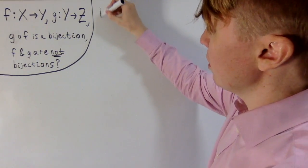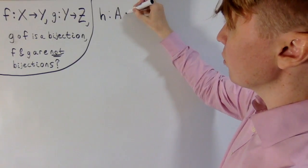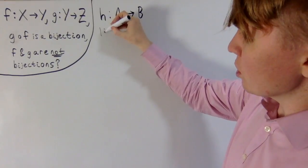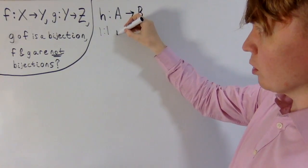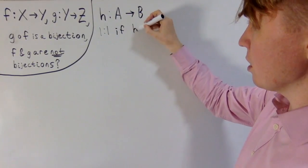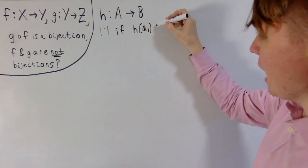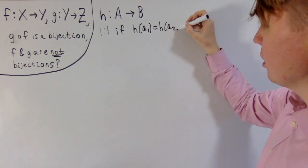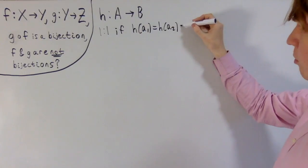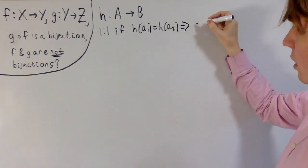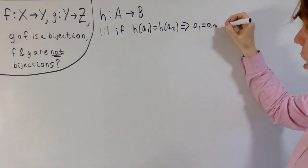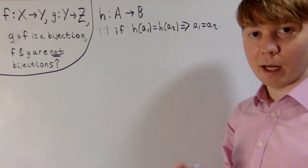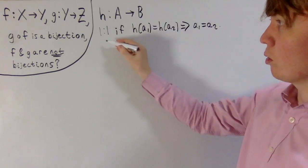We'll start off with some definitions. So you've got a function h going from a set A with its codomain, this set B. We'll start with a definition of h being one-to-one. This basically means that if you've got two elements a1 and a2 in A, and they give you the same output, this must mean that they're actually the same element. So essentially, you can't have two elements in A which map to the same element in B, otherwise it wouldn't be one-to-one.